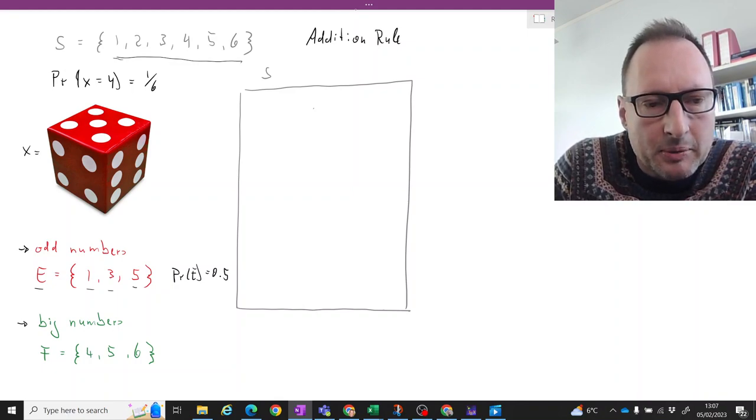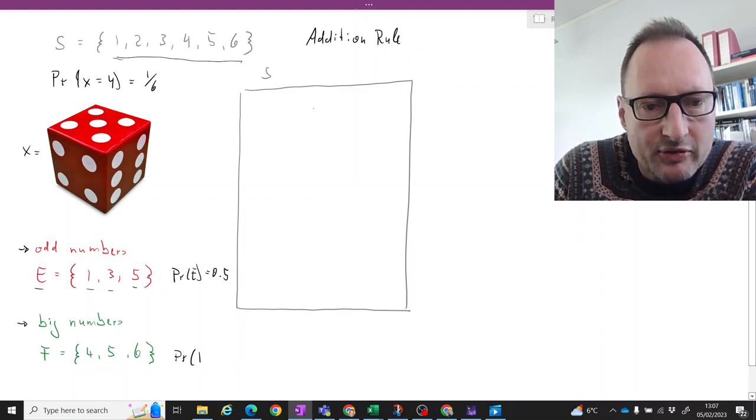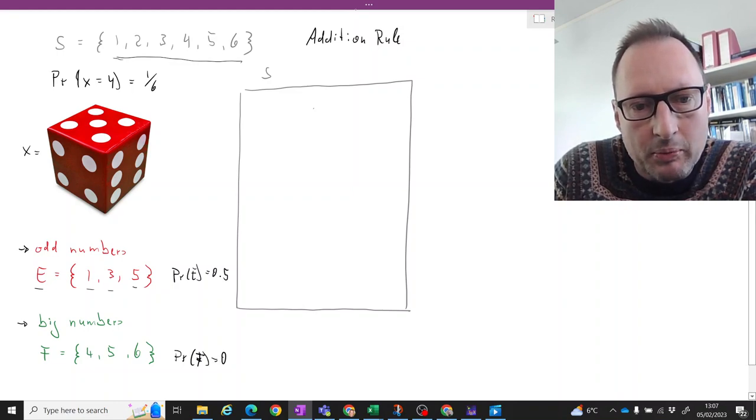And then the probability for big numbers. Big numbers are 4, 5, and 6. Again, the probability of that event, probability of F, is also going to be 0.5.